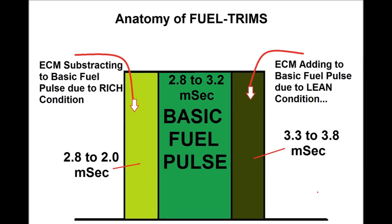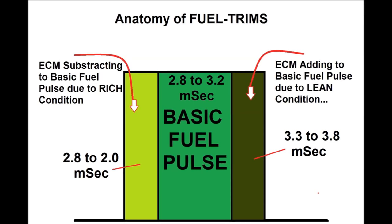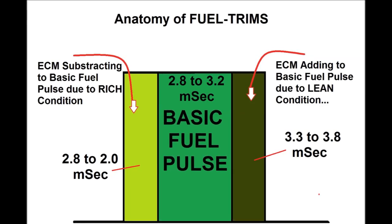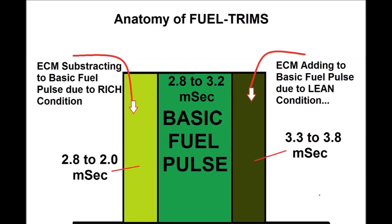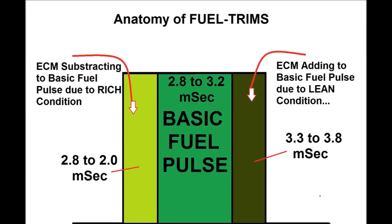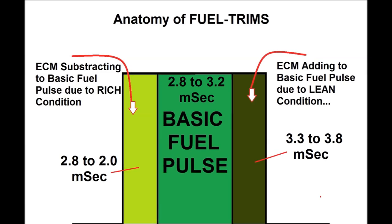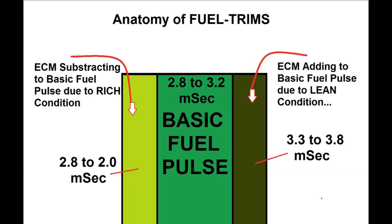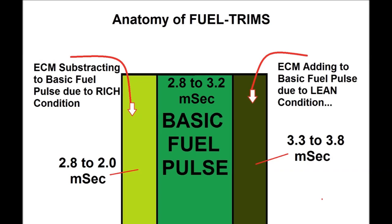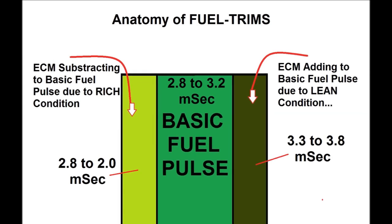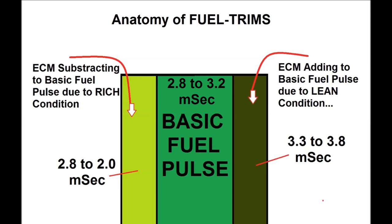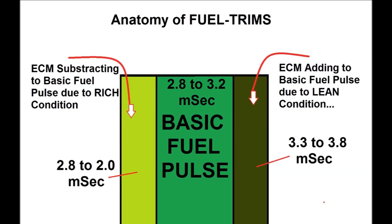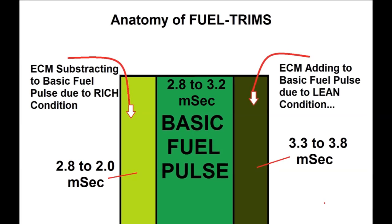The darker square on screen shows the ECM adding to the basic fuel pulse because of a lean condition, where the fuel pulse goes up to maybe 3.6, 3.7, or 3.8 milliseconds. This is what the ECM sees at the oxygen sensor — or in newer cars, the air-fuel ratio sensor — indicating a lean condition, so the computer corrects for it. This is very basic automotive fuel injection.